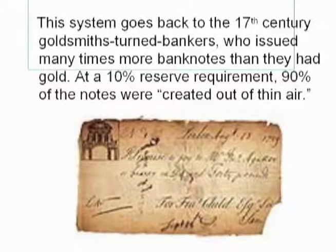Our whole money system goes back to the 17th-century goldsmiths, who would take people's gold for deposit and write receipts called banknotes. People preferred the banknotes to the gold — it was heavy and could get stolen. The goldsmiths quickly discovered they could lend many times more notes than they had gold. They were actually printing banknotes backed by nothing — 9 out of 10 were backed by nothing. That was the beginning of the 10% reserve requirement.